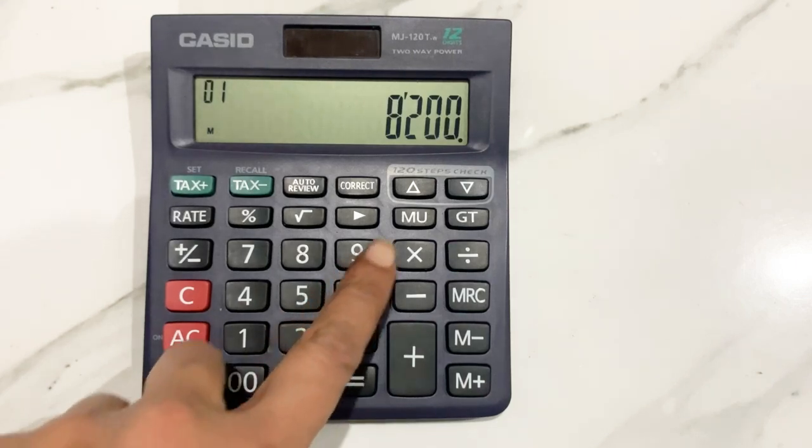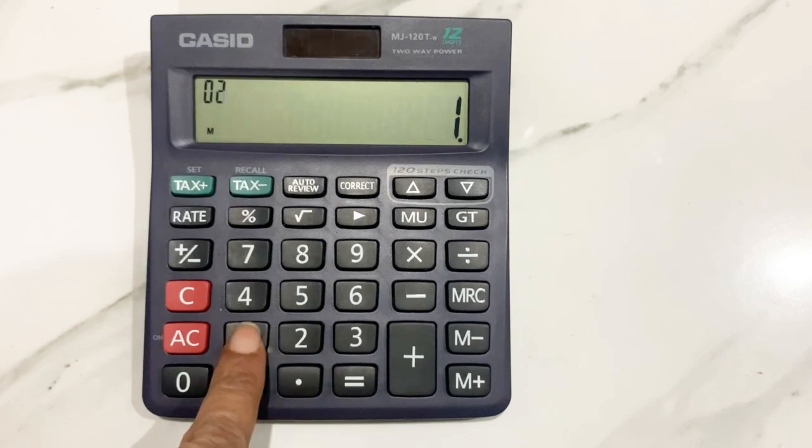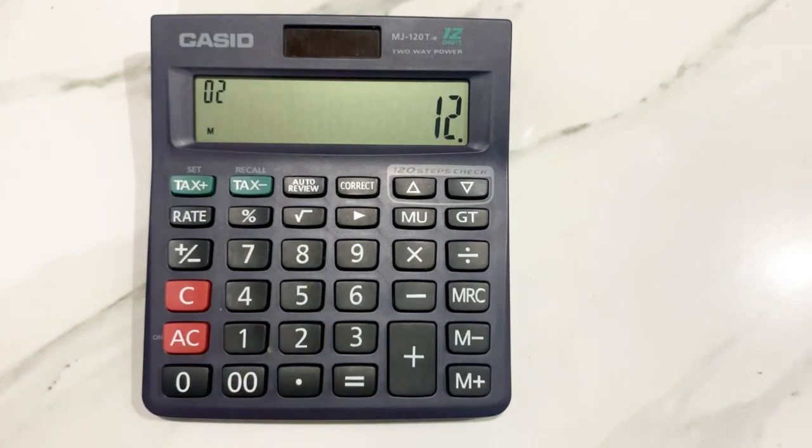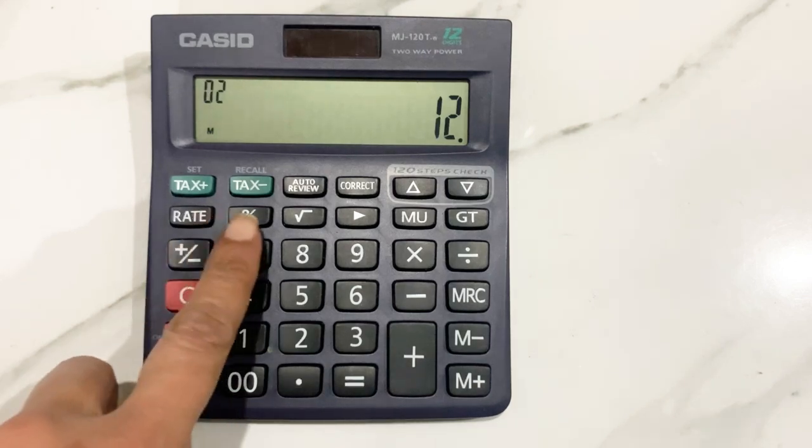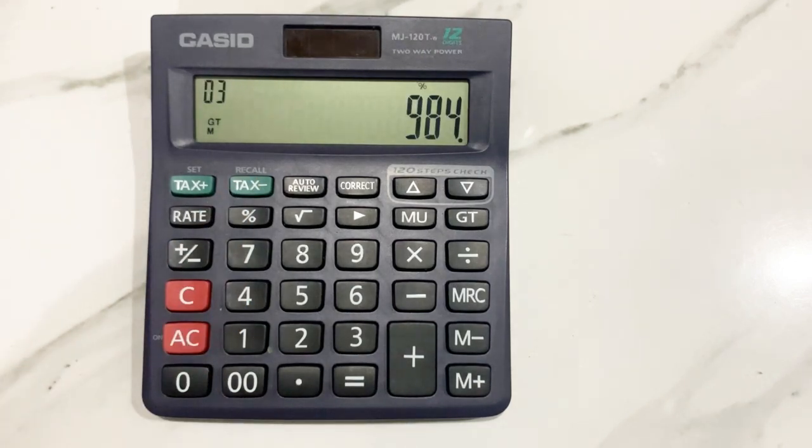So in the first step we will multiply it with 12. In the next step we will press the percentage button. Now we will press the minus sign.